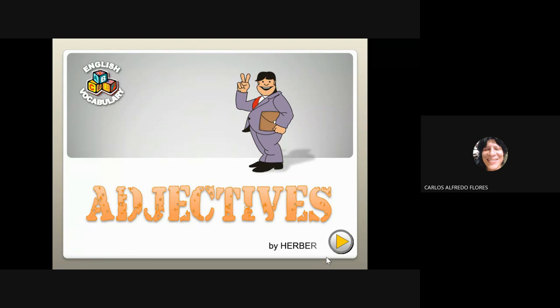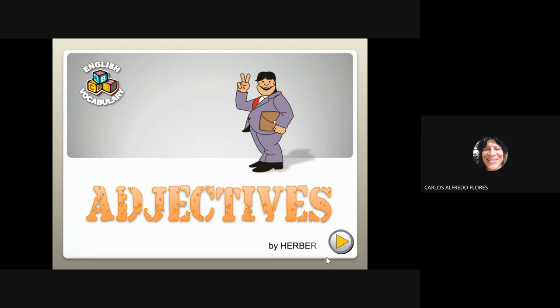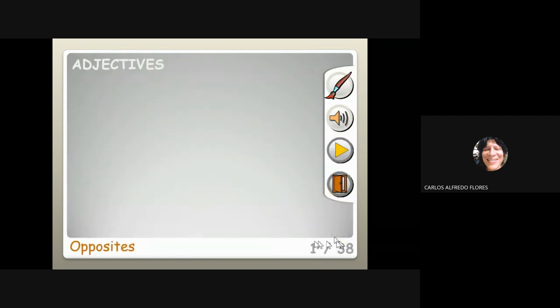Adjectives are words that we use to describe people. Beautiful, handsome, tall, short, fat, shabby, happy — those are adjectives that tell you something about people, things, or animals. We use them to make descriptions.